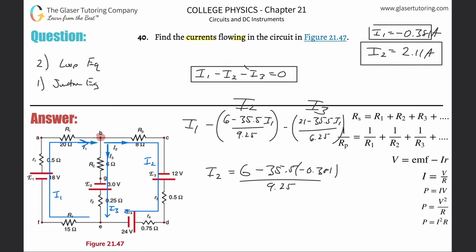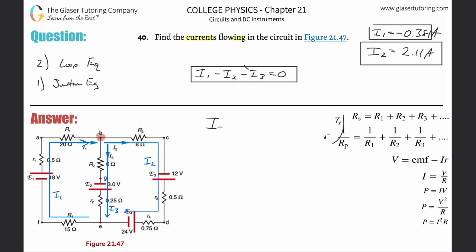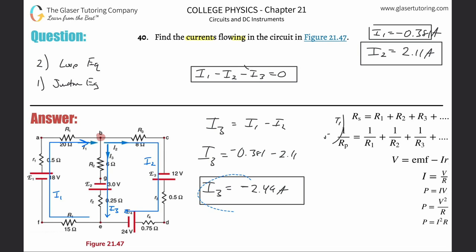For I3, use the junction equation: I3 = I1 − I2 = −0.381 − 2.11 = approximately −2.49 amps. The negative sign again means I3 flows in the opposite direction from what was predicted.